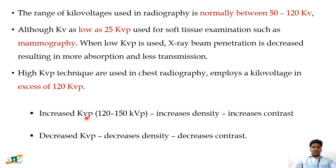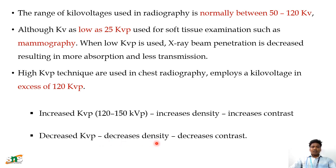When increasing the KVP, like in the 120 to 150 KVP range, it increases the density of the X-ray beam, which results in decreased contrast because X-ray penetration is higher. But with decreased KVP, it results in increased contrast and also increases the patient dose. That is why we use the High KVP technique.